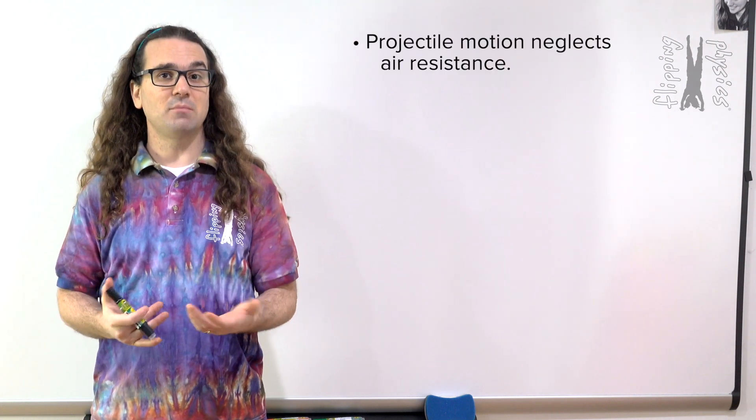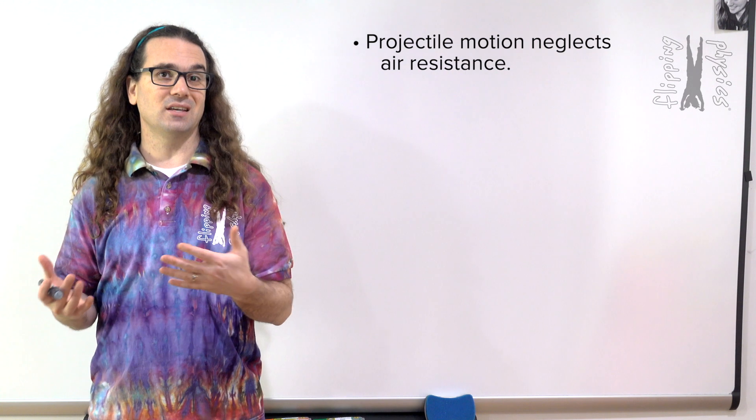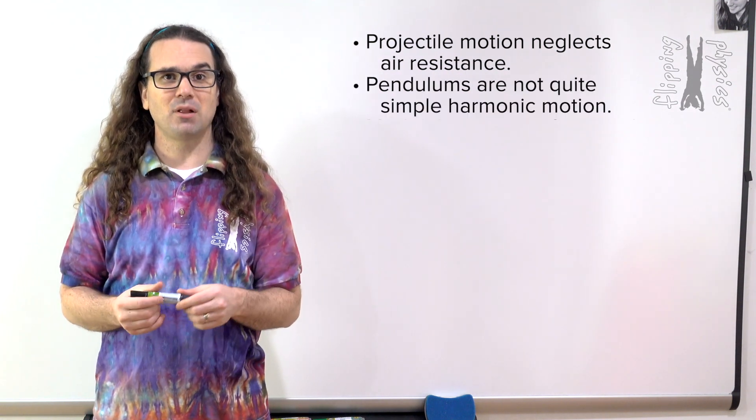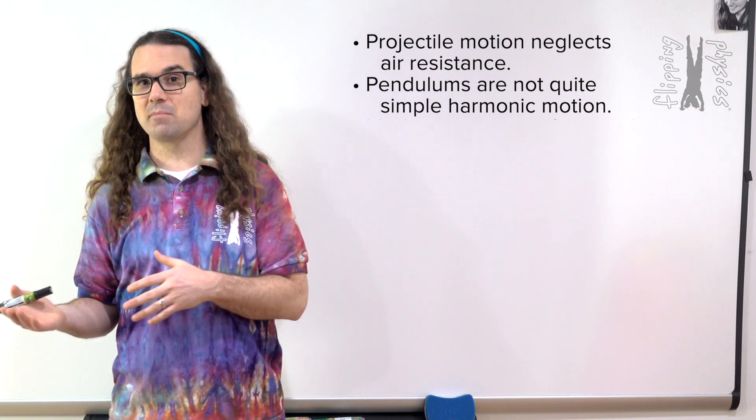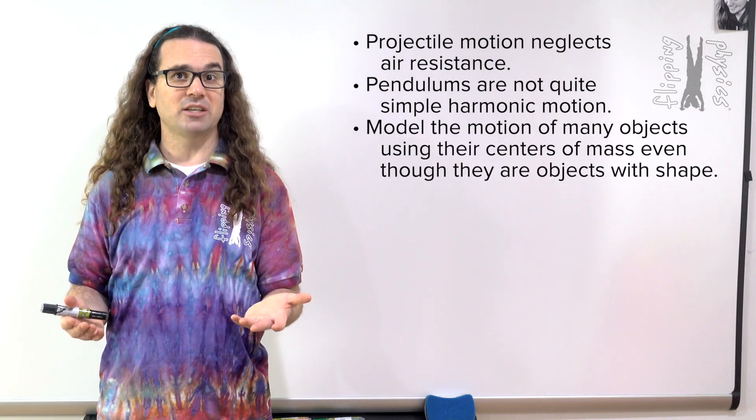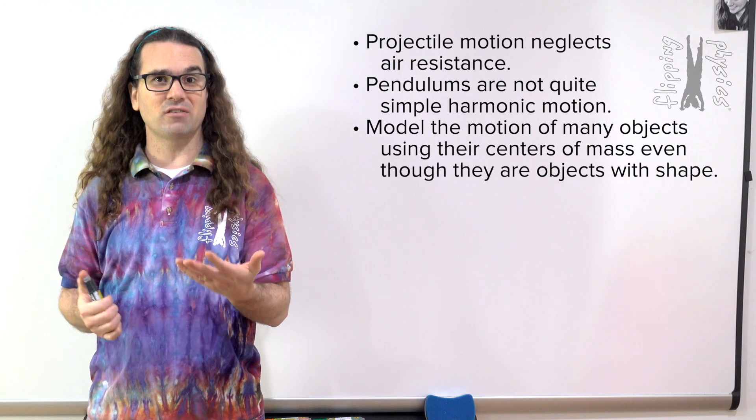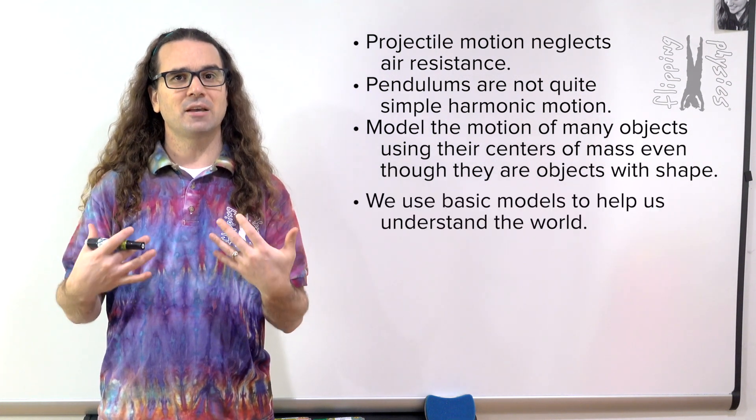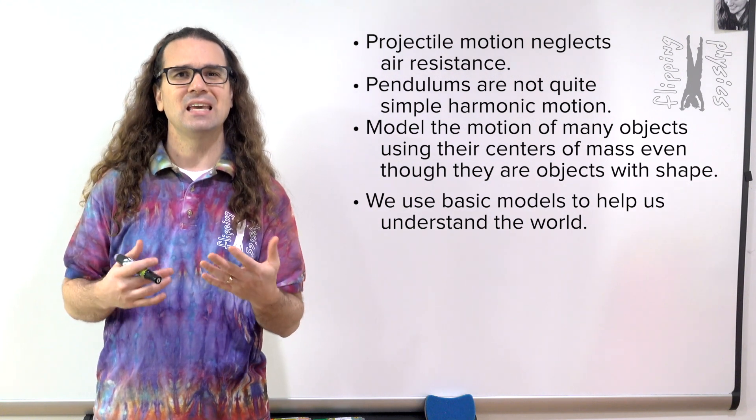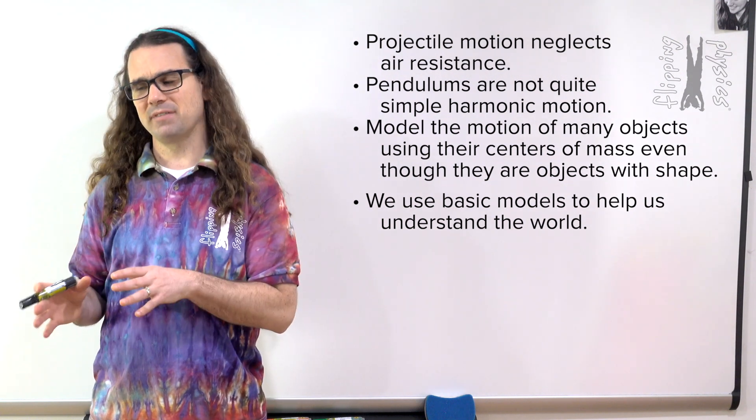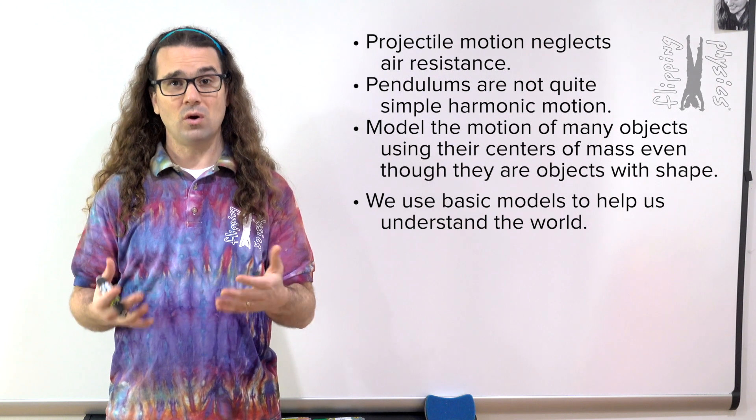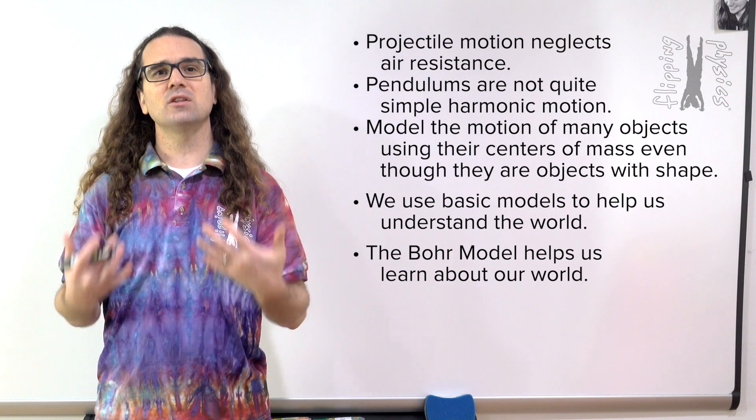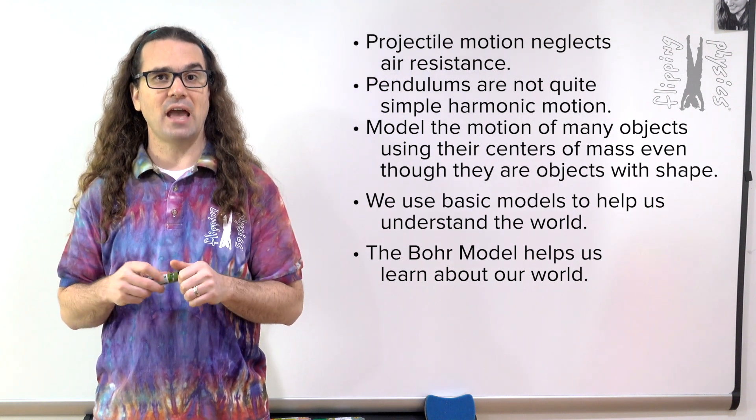So, we still use projectile motion equations even though we know air resistance exists. We still model many pendulums as simple harmonic motion even though simple harmonic motion is an approximation. We model objects by discussing what happens to their center of mass rather than the whole object. Often, we use basic models of the world to help us understand what is happening even if those models are not perfect. In other words, we know electrons in orbital shells may not quite be correct. However, we can still learn a lot from modeling the hydrogen atom that way.